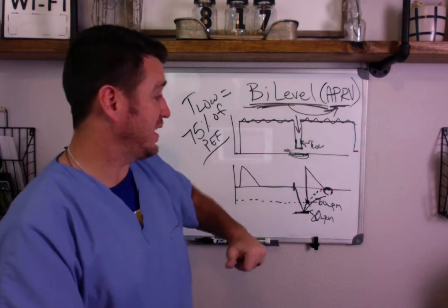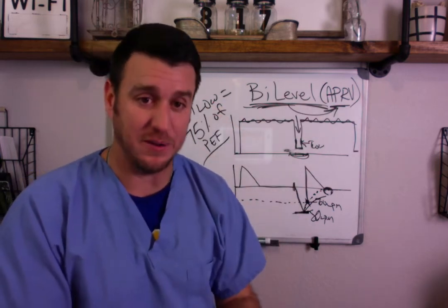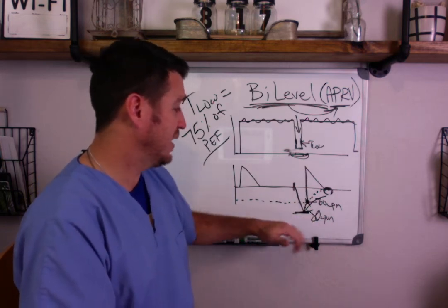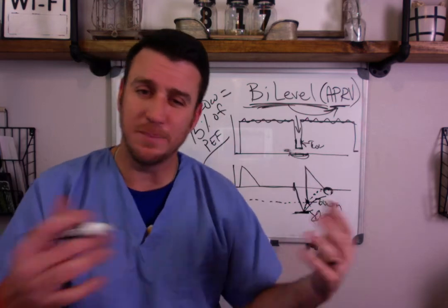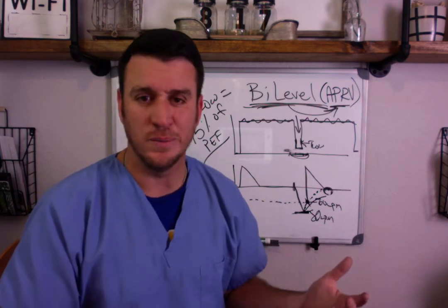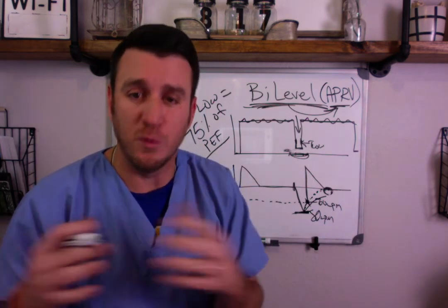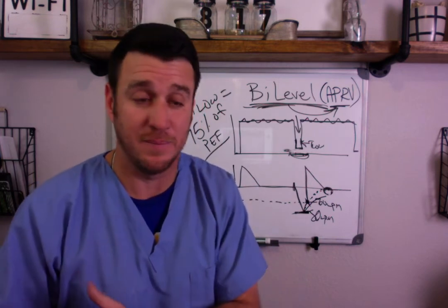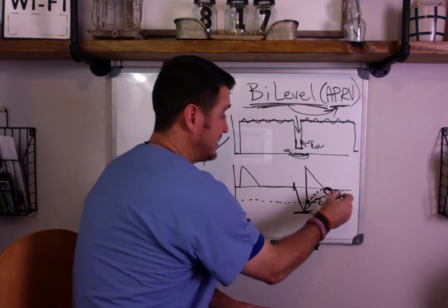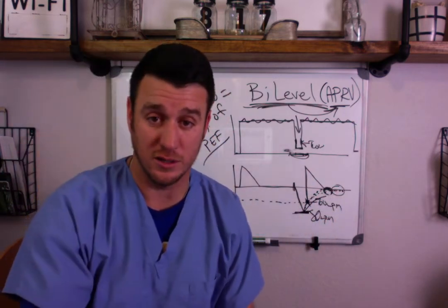In APRV: no set PEEP, but intentional auto-PEEP based on a time low setting of 75% of peak expiratory flow. Some places use 50% expiratory flow — that's fine too, as long as you're not allowing complete alveolar de-recruitment. You don't want those alveoli to be completely empty. If your flow pattern comes to zero, your time low is too long.